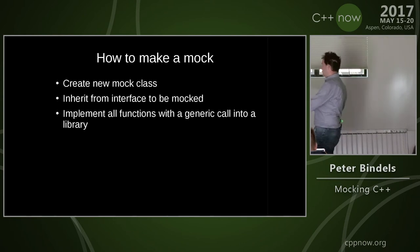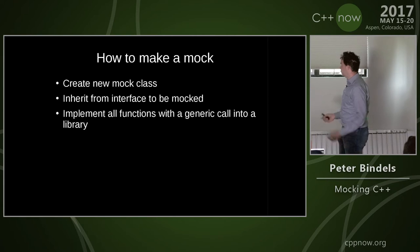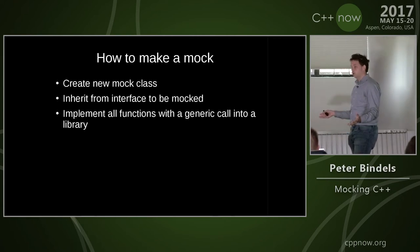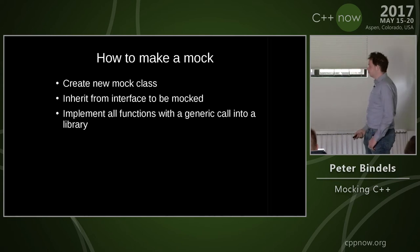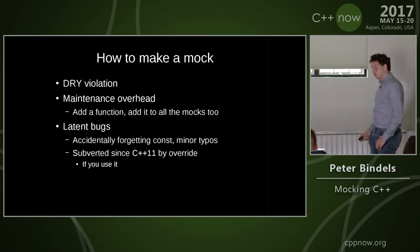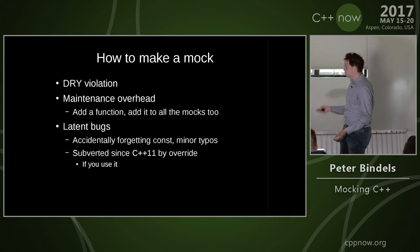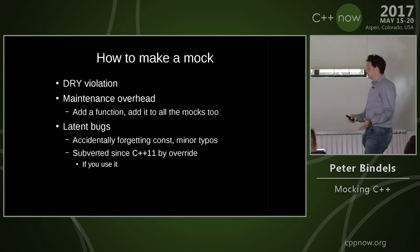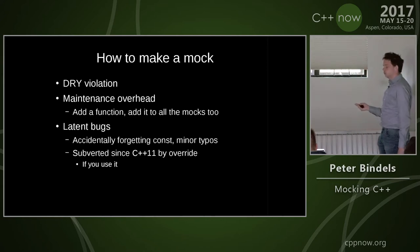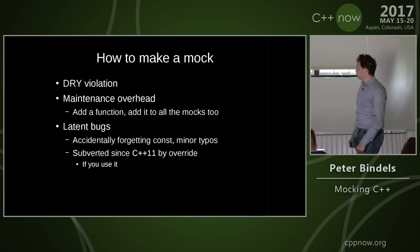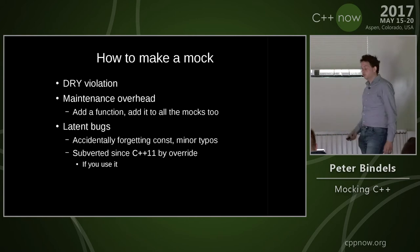I can create a mock by making a mock class — assuming I can for now. I inherit from the interface being mocked and implement all the functions manually. That's bad, because I'm specifying my interface and then re-specifying it with a second syntax just to get a mock. Every time I add a function I add it to all the mocks; if I remove it I may forget to remove it from the mock. C++11 kind of fixed that by having `override`, so if your mocking framework uses that you will get a compiler error — which is great, if it uses it.